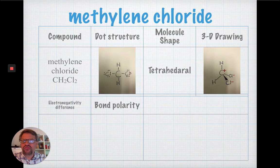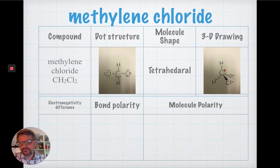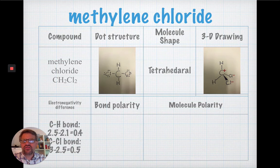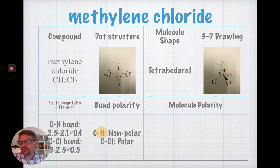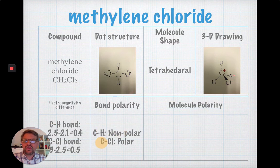Now, for the bonds, determine whether they are polar or nonpolar. So, your electronegativity difference is C to H, 0.4. C to Cl, 0.5. So, bond polarity, carbon-hydrogen bond is nonpolar. Carbon-to-chlorine bond is polar.